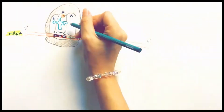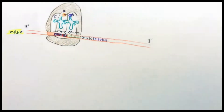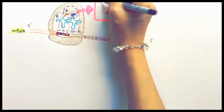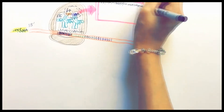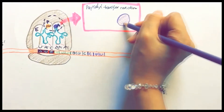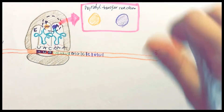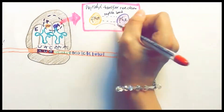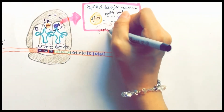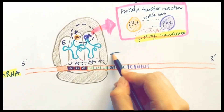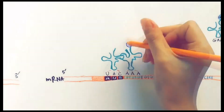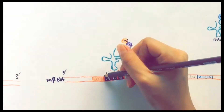The next step is the peptidyl transfer reaction. The polypeptide is removed from the tRNA in the P-site and transferred to the amino acid in the A-site. This transfer is accompanied by the formation of a peptide bond between the amino acid at the A-site and the last amino acid in the growing polypeptide. The peptidyl transfer reaction is catalyzed by a component of the 50S subunit known as peptidyl transferase.